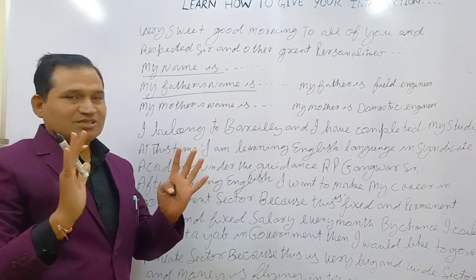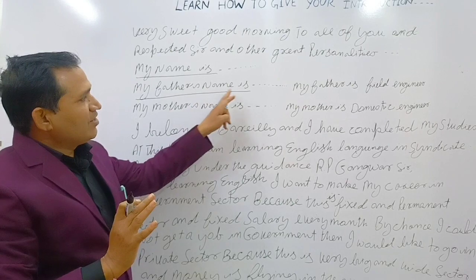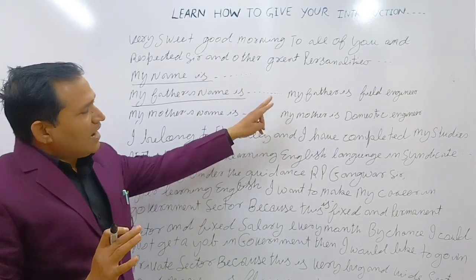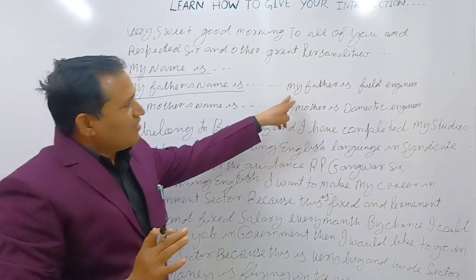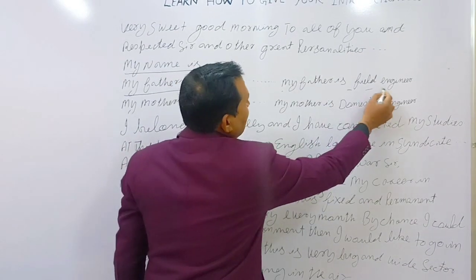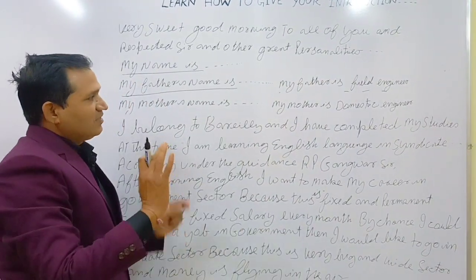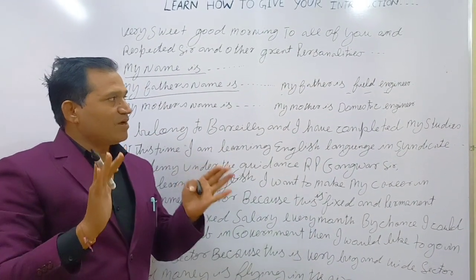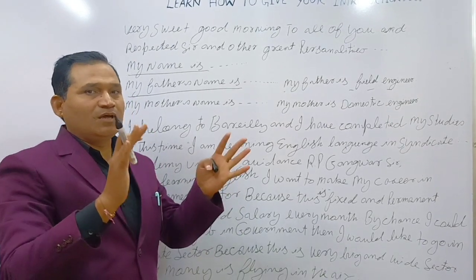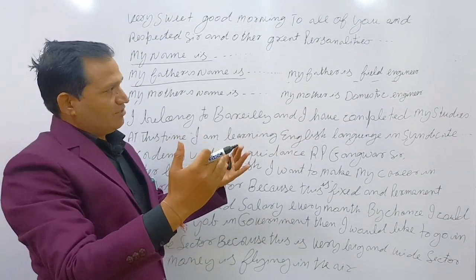It means just what is the name of your father. You can write your father's name here, and after that you can speak: 'My father is a field engineer.' My father is a field engineer, which means my father is expert in all the activities outside.